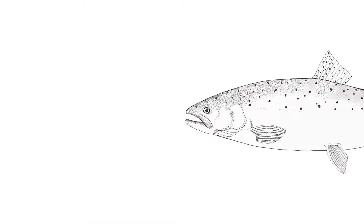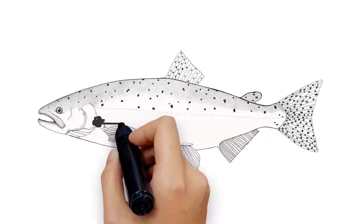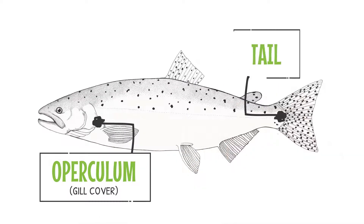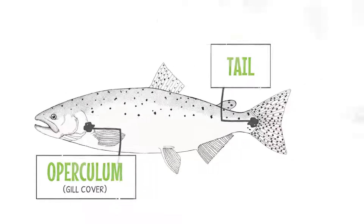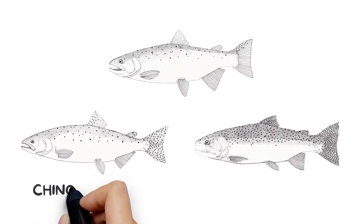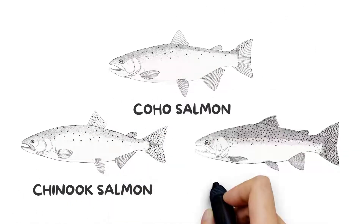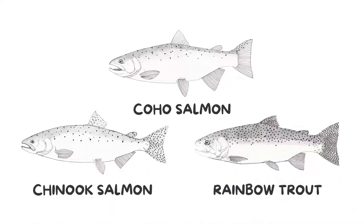Look at the gill cover and the tail for spots. No spots on the gill cover but spots on the tail indicates you have a chinook salmon, coho salmon, or rainbow trout.